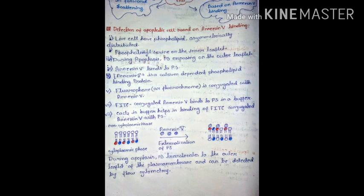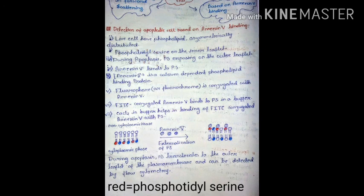As shown in the picture, in a normal cell the phosphatidylserine (indicated in blue/green) is present on the cytoplasmic face or inner side of the plasma membrane. When a cell undergoes apoptosis, phosphatidylserine translocates to the outer leaflet of the plasma membrane and can be detected by flow cytometry.